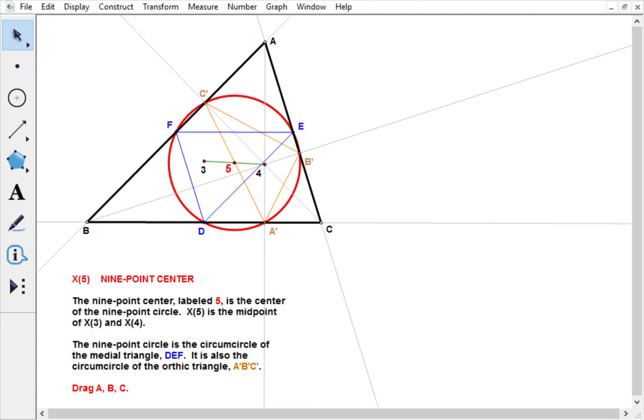Here is the nine-point center, which is X5 in Clark Kimberling's Encyclopedia of Triangle Centers, from which this diagram is taken.